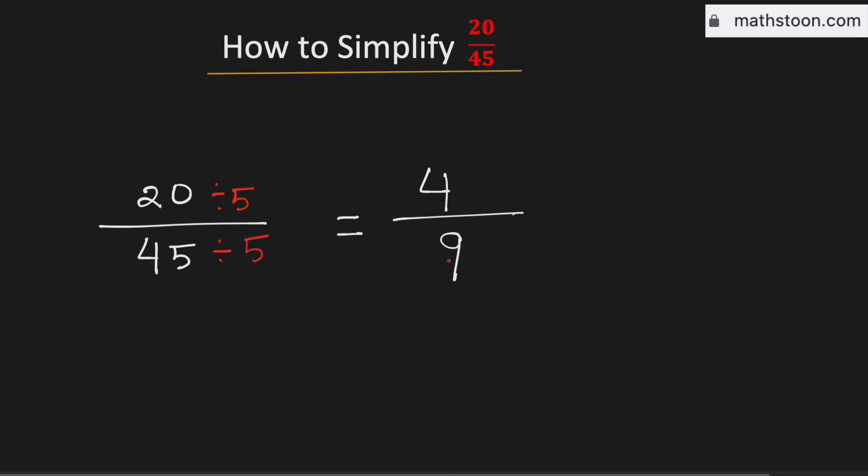So this fraction is simplified, and this is the simplified form of the fraction 20 over 45. And this is our final answer.